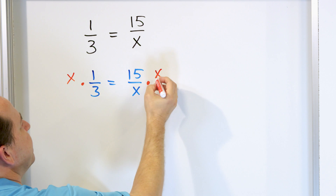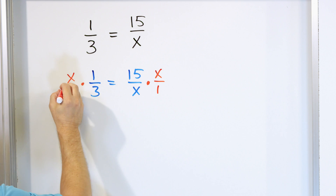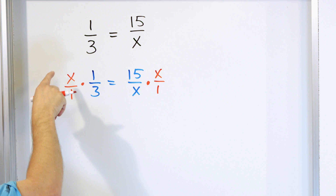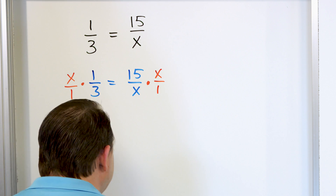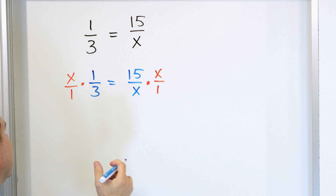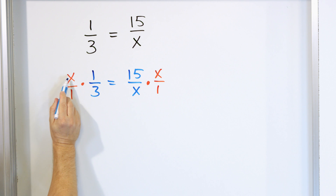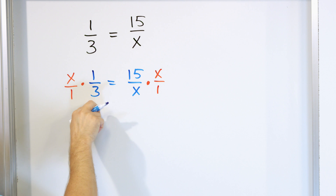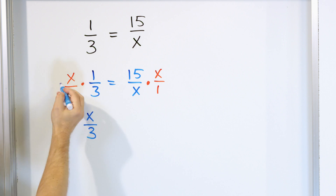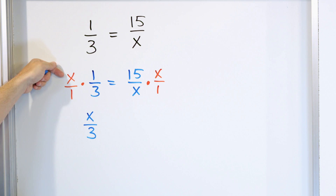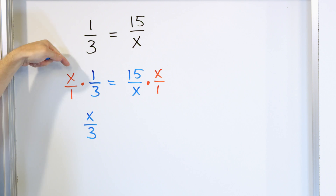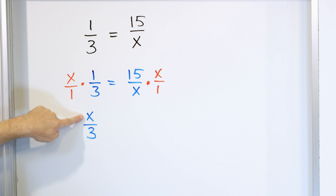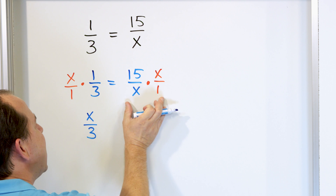Now we're multiplying by x on both sides. We can write that as x over one. On the left, we have two fractions — on the top, x times one, which is just x; on the bottom, one times three, which is three. This is just multiplying fractions. The letter x here doesn't really change anything — you still multiply the numerators. x times one is x, and one times three is three.